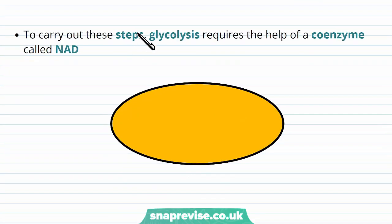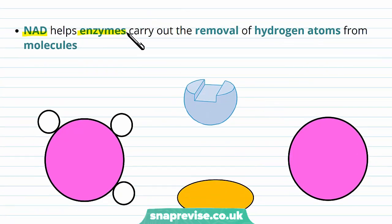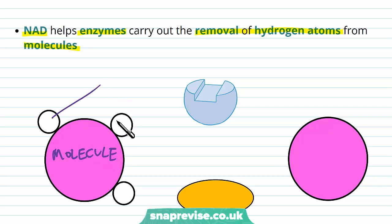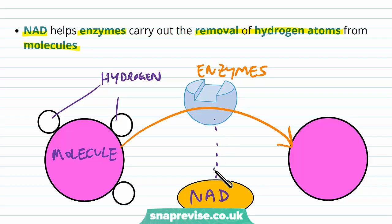Before going through these steps in more detail, we need to note that glycolysis requires the help of a particular molecule — a coenzyme called NAD. The purpose of NAD is that it helps enzymes, because it is a coenzyme, carry out the removal of hydrogen atoms from molecules. For example, fats and oils have lots of hydrogen atoms on them. Particular enzymes are designed to remove hydrogens from molecules, and the NAD is used to help these enzymes carry out this function.